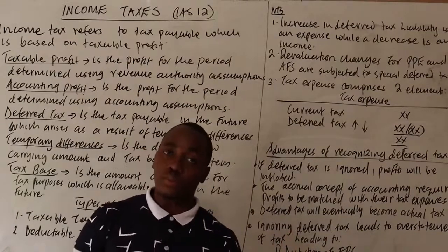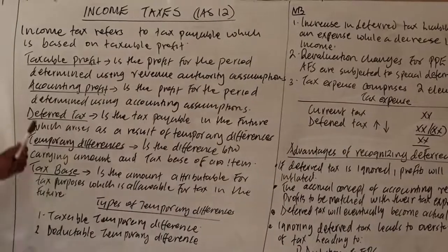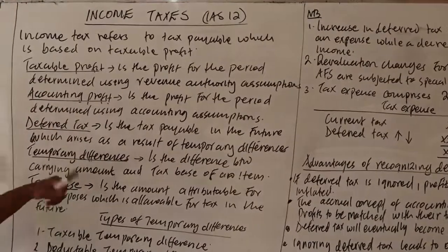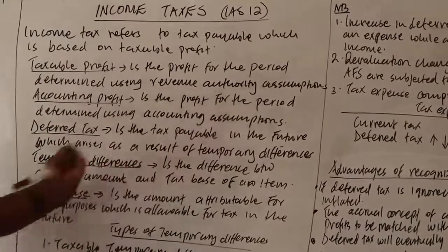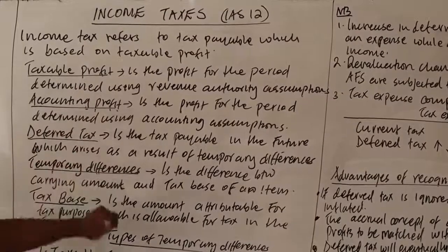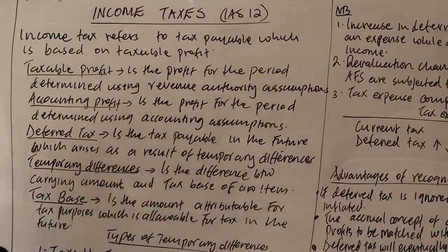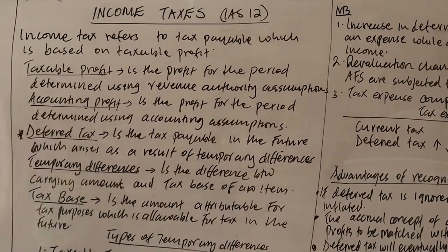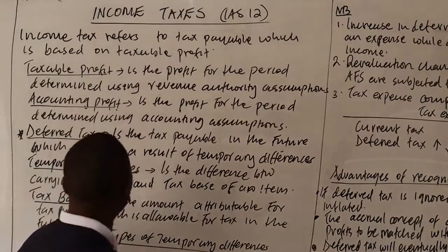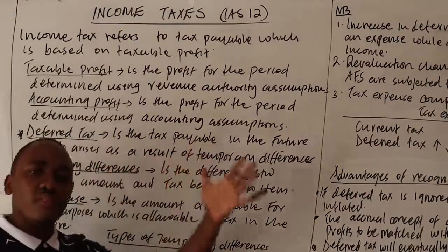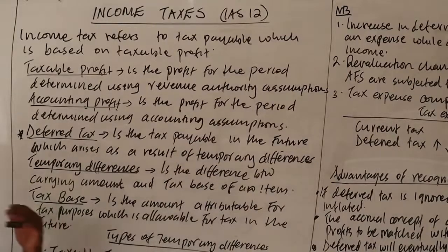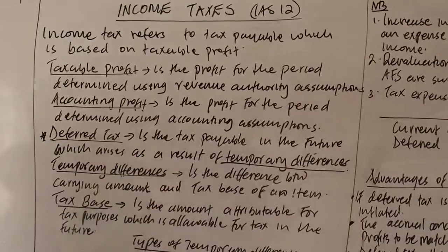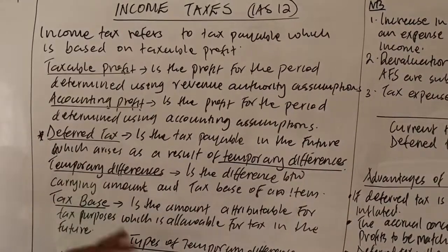The difference between taxable profit and accounting profit: taxable profit is derived using revenue authority assumptions, while accounting profit is determined using accounting assumptions and principles. Then we have what we call deferred tax. Deferred means something pushed forward, so deferred tax is the tax which is payable in the future, arising as a result of what we call temporary differences.